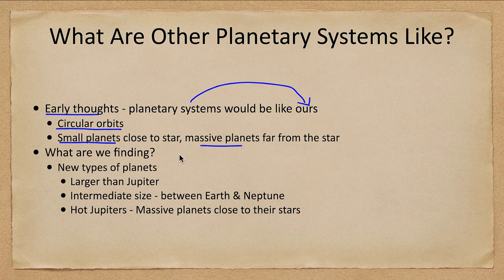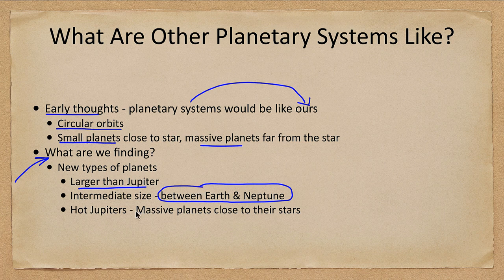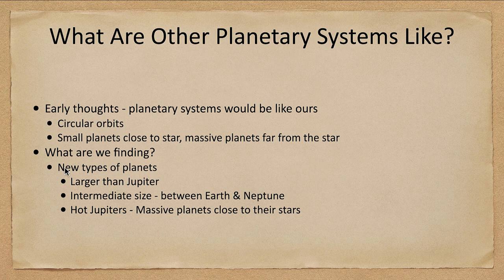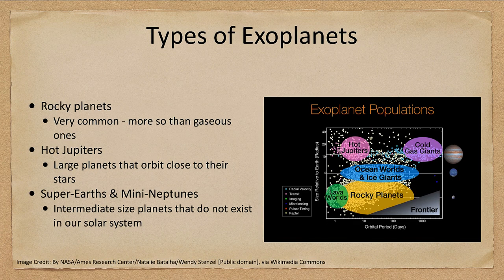We expected small terrestrial planets close to the star and massive planets far away. What are we actually finding? New types of planets — planets larger than Jupiter, many planets intermediate in size between Earth and Neptune, planets that do not exist in our solar system, and hot Jupiters: massive planets that exist very close to their stars. Looking at a chart, we see exoplanets plotted with size on the y-axis and orbital period on the x-axis.